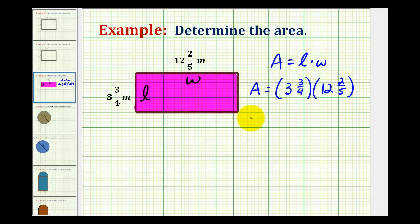In order to determine the product of two mixed numbers, we have to rewrite them as improper fractions. So for 3¾, we'll have 4×3+3. That's going to be 15/4. And then for 12⅖, we'll have 5×12. That's 60+2, 62/5.